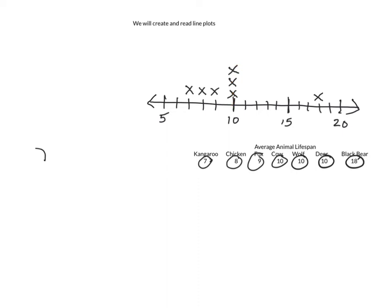So we could also find the outlier. An outlier is any number that is very different from the rest of the numbers. And right away we notice that 18, the age of the black bear, is very different from the rest of the set.